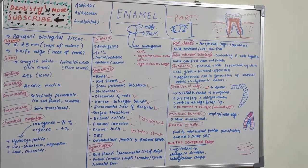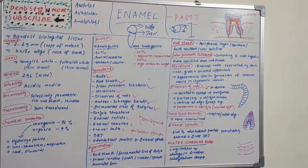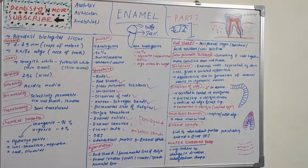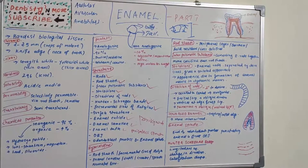Prismless enamel is not visible microscopically. All its epitaxial crystals are parallel to one another and perpendicular to the striae of Retzius. It is more mineralized than the bulk of enamel present beneath it. This is also referred to as structureless or prismless enamel.